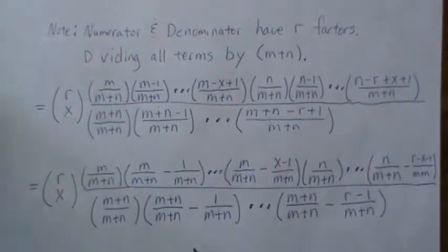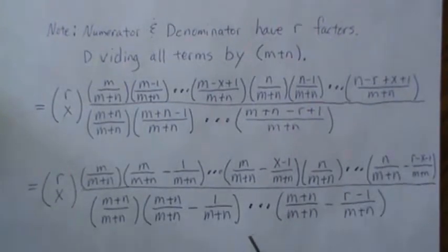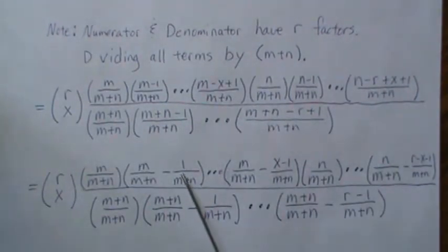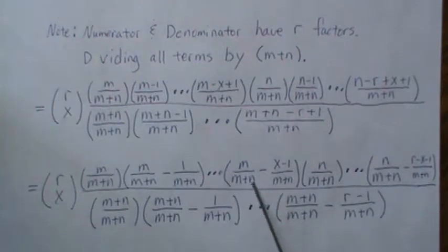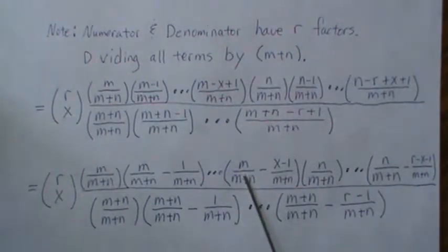Now the reason that we do that is as m and n go to infinity, this goes to 0, which means it's this. And the limit of this we said was p and p. And here this goes to 0.